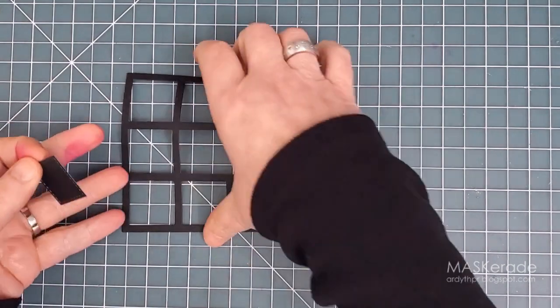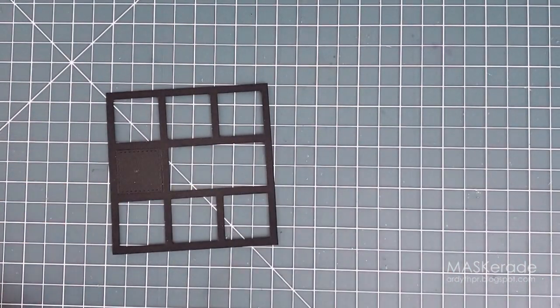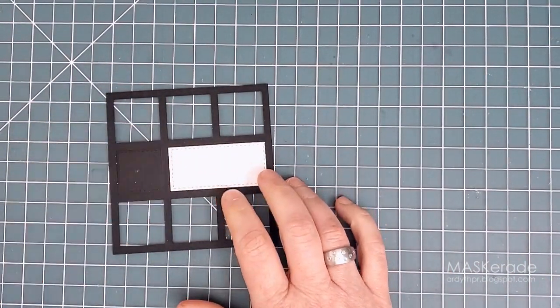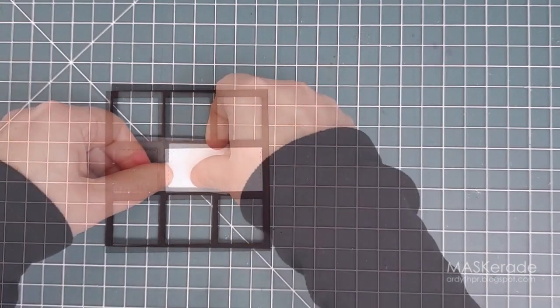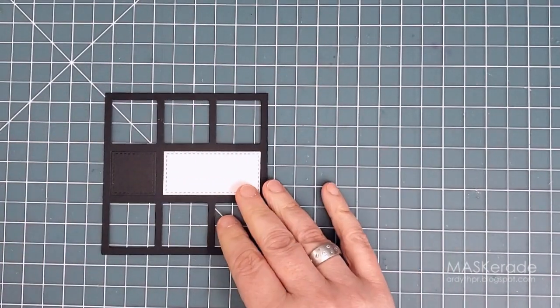I'm going to cover one of the squares with the black cutout for my dancing penguin and the rectangle with white for my sentiment. I just used some tape on the back to hold these two pieces in place in the frame.